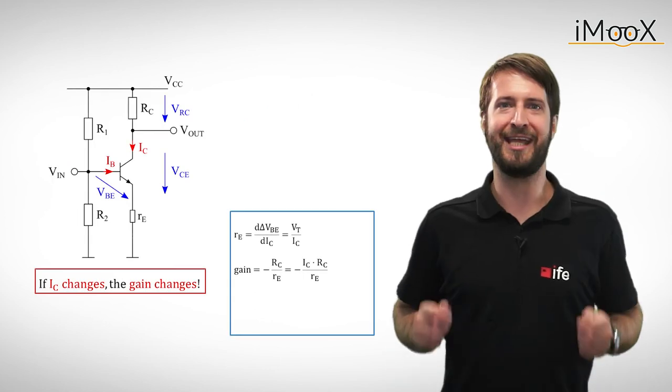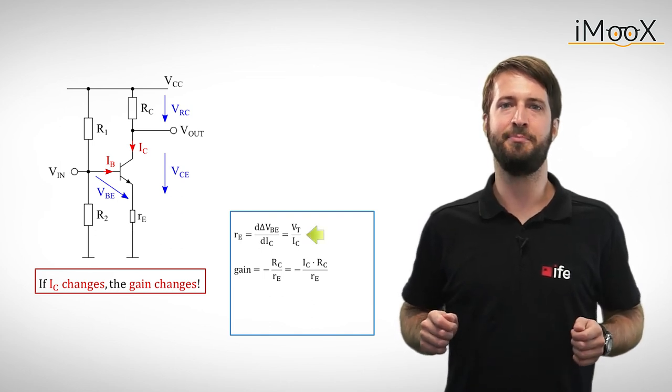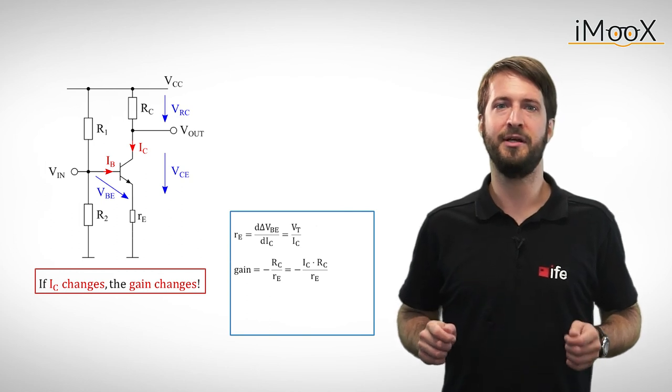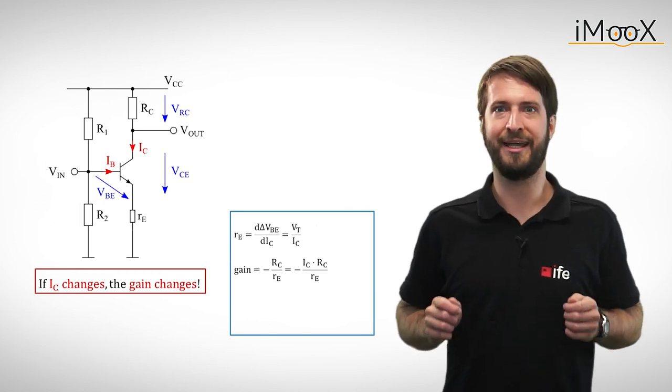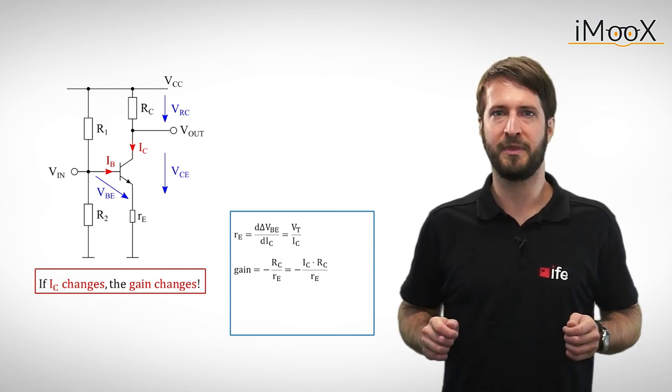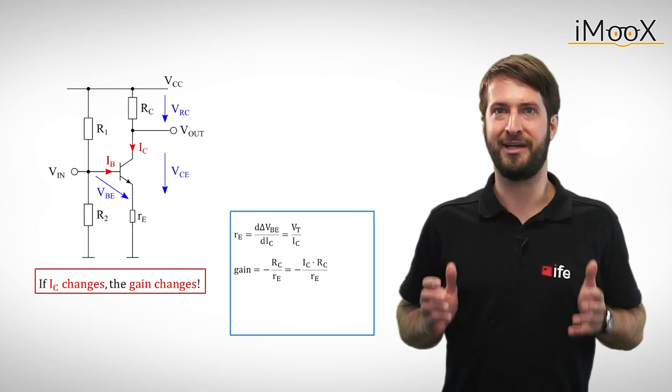The extra gain comes at the expense of linearity, since the intrinsic resistance is dependent on the collector current. A varying collector current will therefore cause a varying gain and furthermore a varying input impedance. It is also very hard to bias, since the base emitter voltage varies with temperature.